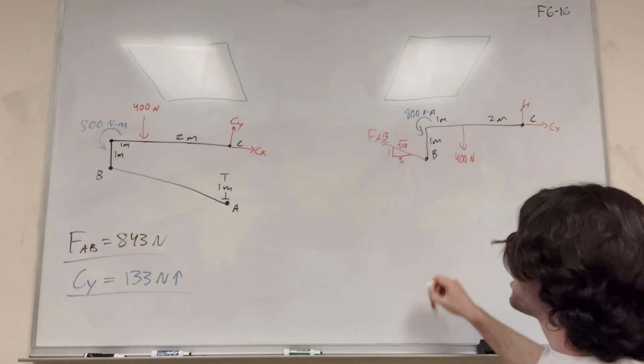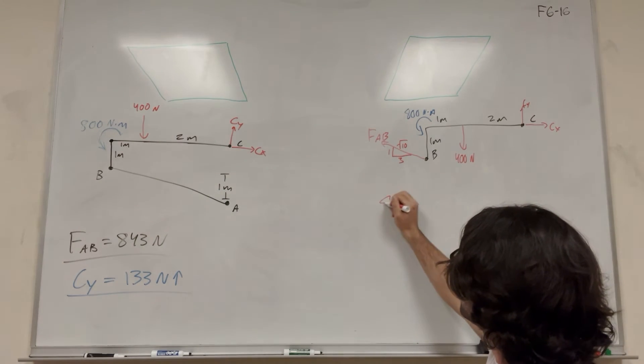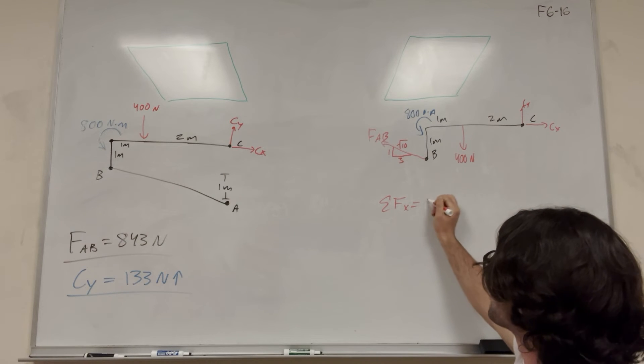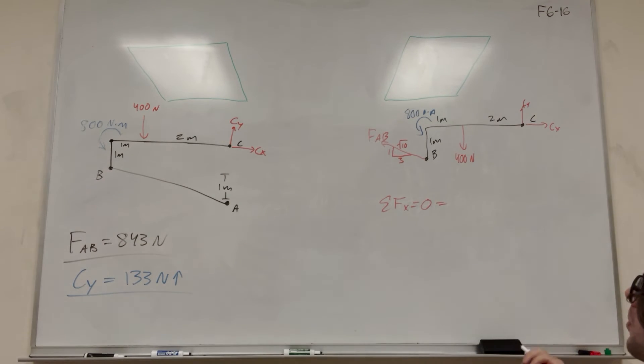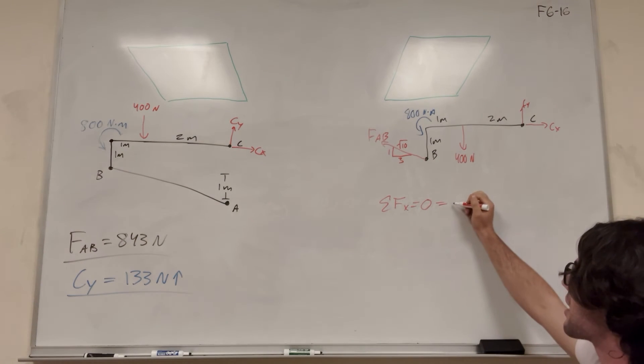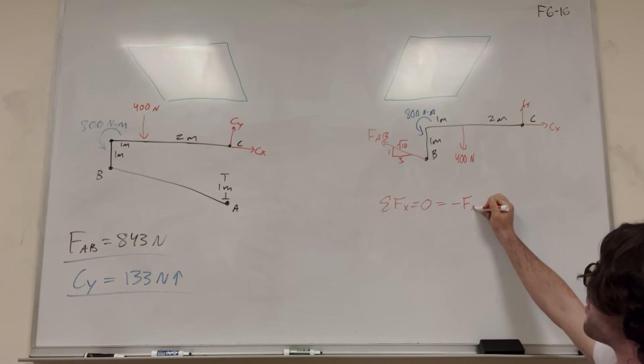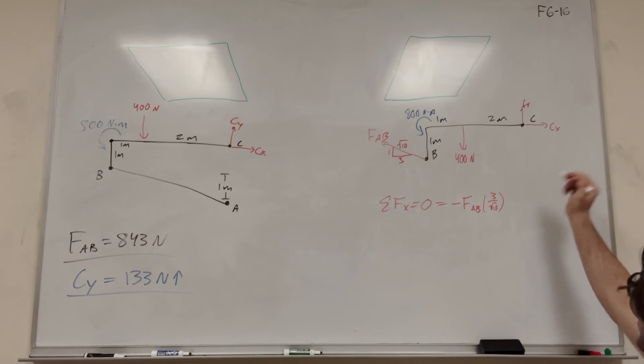Sum of the forces in the X direction now to find Cx. We know it's equal to zero. And so force AB points in the negative X direction. So it's going to be minus FAB times 3 over square root of 10.